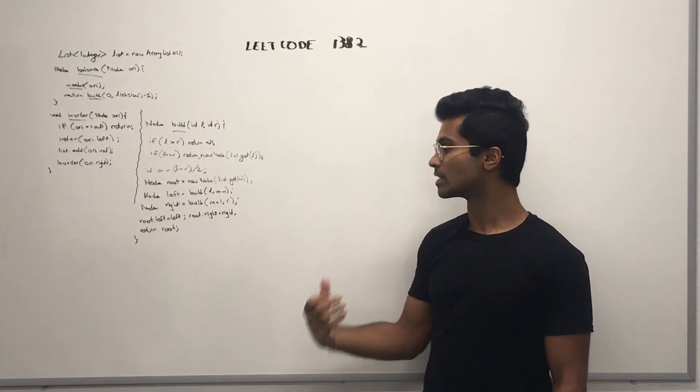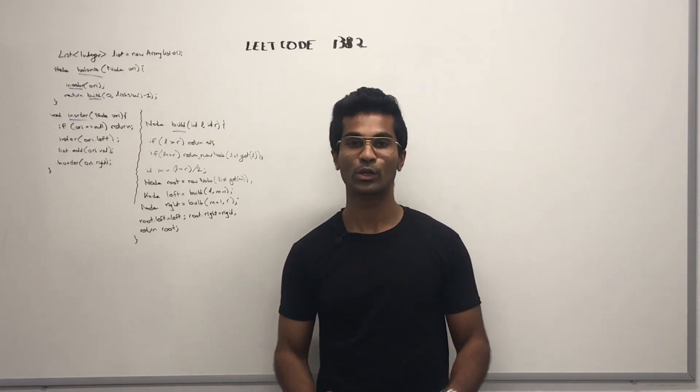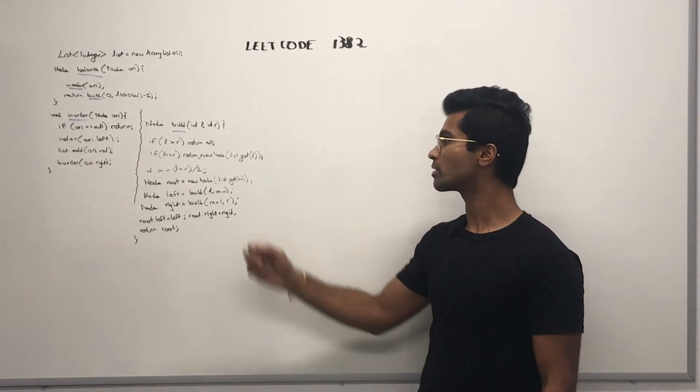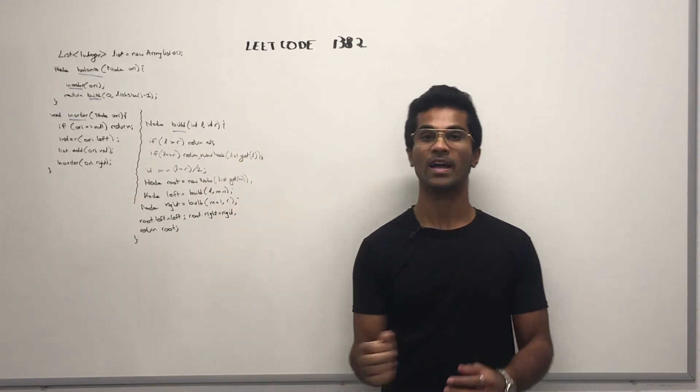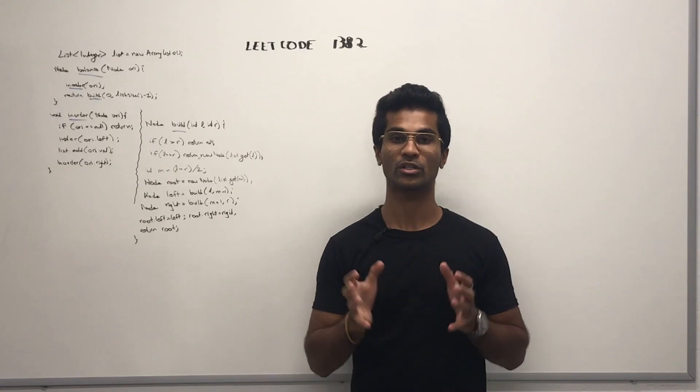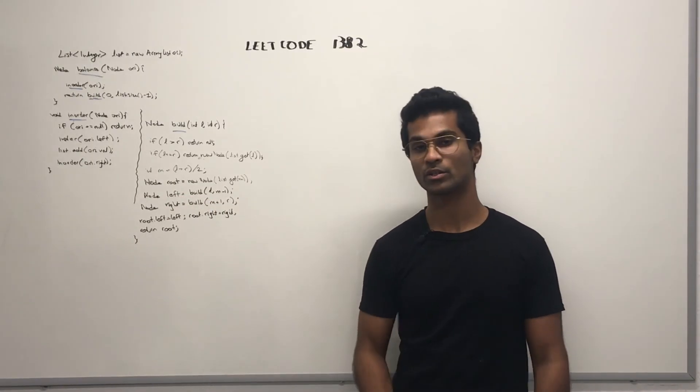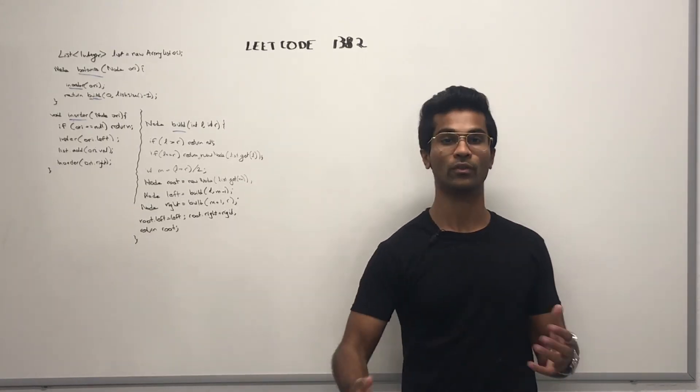Then M gets calculated as L plus R by 2. So we instantiate a new root node left and right by taking our pointers. So L, L goes here. R, R goes here. And we avoid the one that we just picked as M. After we get our left and right subtrees, we attach it to our root, and then we respond with the root which is fully balanced.